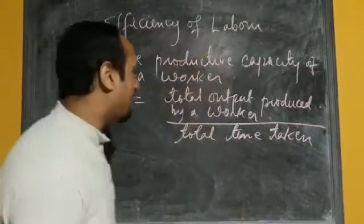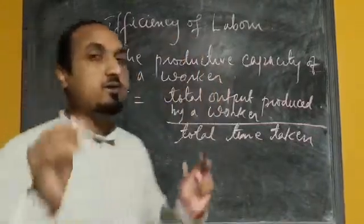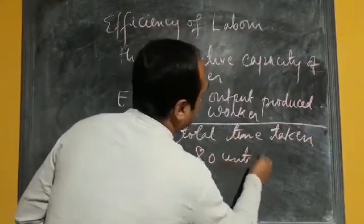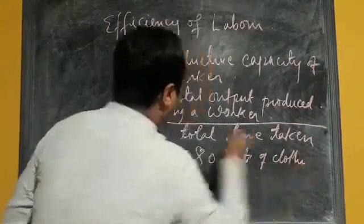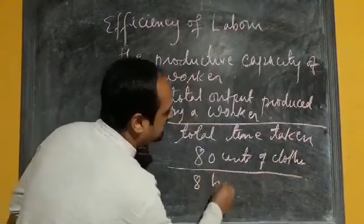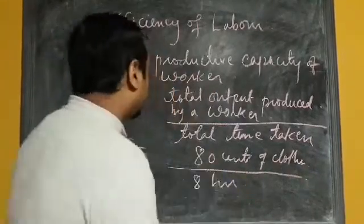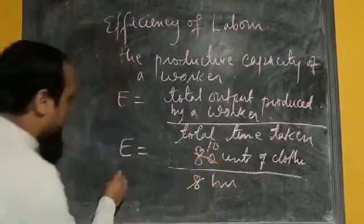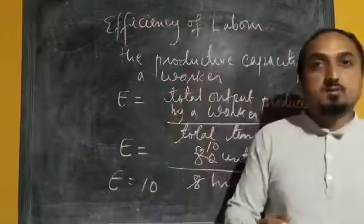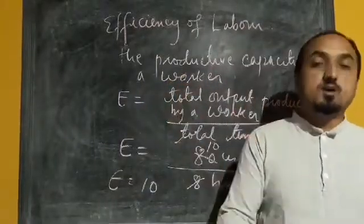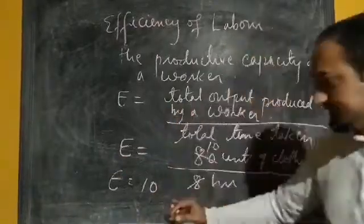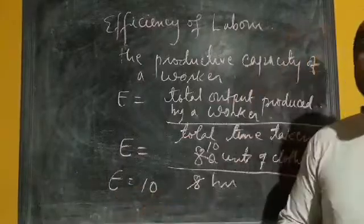Suppose one worker is producing 80 units of clothes and the time taken is 8 hours. If you divide 80 by 8, what is the efficiency of labour? It is 10. So the efficiency of labour here is 10. This is the way to calculate the efficiency of labour.